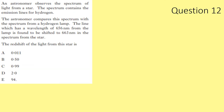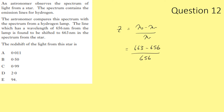Question 12. An astronomer observes hydrogen emission lines from a star. A line at 656 nm from a lamp is shifted to 663 nm from the star. Redshift Z = (λ_observed − λ_rest) / λ_rest = (663 − 656) / 656 = 0.011. Answer: A.